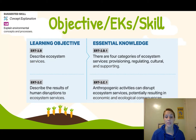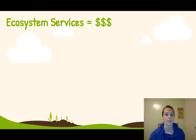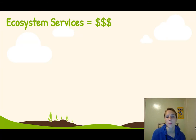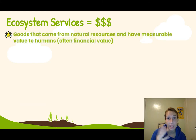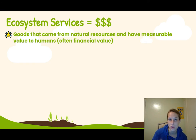Today we'll be learning about the different categories of ecosystem services, what they are, and how human activities can disrupt these services. One thing to keep in mind is that ecosystem services are often talked about in the context of money and financial benefits. Ecosystem services are goods that come from natural resources and have measurable value to humans, and often we're talking about the financial value to humans.